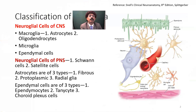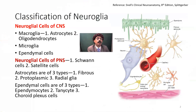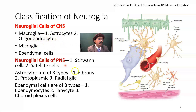Classification of neuroglia: In the central nervous system we have macroglia. First is the astrocyte — star-shaped with many processes. Second is the oligodendrocyte, which has fewer processes.